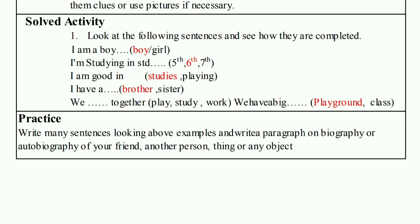Choose your options and complete the sentence, then write it in your notebook. Now practice: write many sentences looking at the above examples and write a paragraph on biography or autobiography of your friend, another person, thing, or any object.